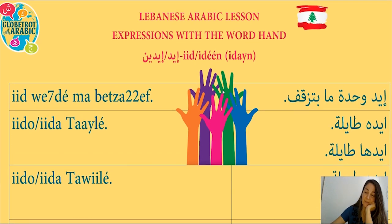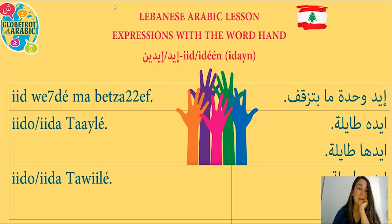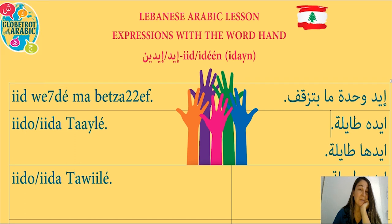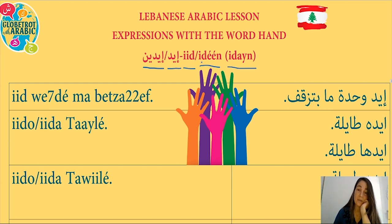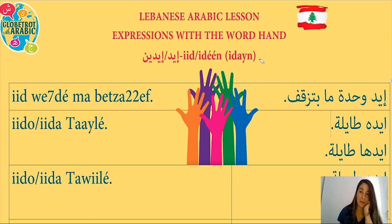I was capable of remembering 28 expressions. I'm sure there are more, but these are the ones I was able to remember. Before we begin, we have to know what is the meaning of the word hand in Arabic: eid. In the singular form we say eid, and eden is the plural form, sometimes pronounced as eden. So eid in the singular and eden in the plural.